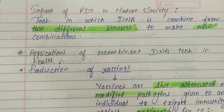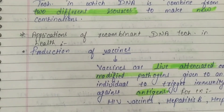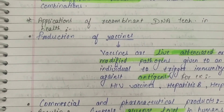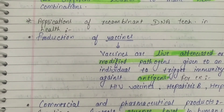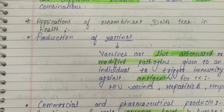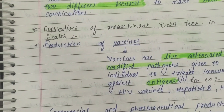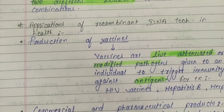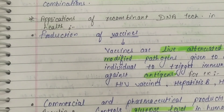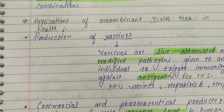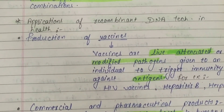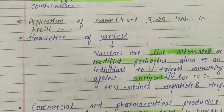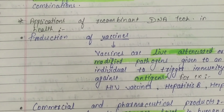Applications of RDT in health: firstly, RDT is used to produce vaccines. Vaccines are live attenuated or modified pathogens given to individuals to trigger immunity against antigens.